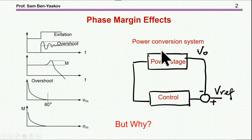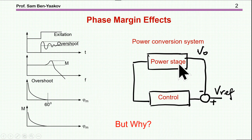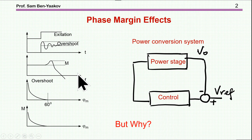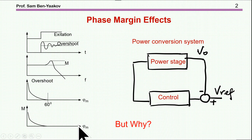I'm showing here a PAL conversion system. Here is a PAL state — this is a control, it's a feedback system. We know that the behavior of this system for a step in the input or a disturbance really depends on the phase margin. For example, if the phase margin is smaller than 60 or 45 degrees, then the response to a step will be with an overshoot. Here is the overshoot. And also in the frequency domain, we're going to see this hump, this peak, as we go toward the end of the bandwidth. So the overshoot and the hump are a function of the phase margin.